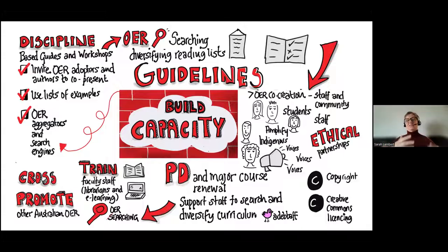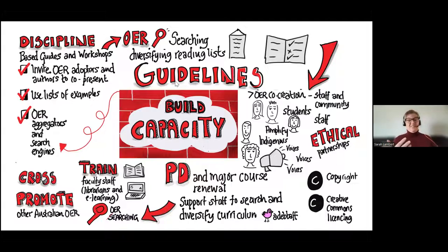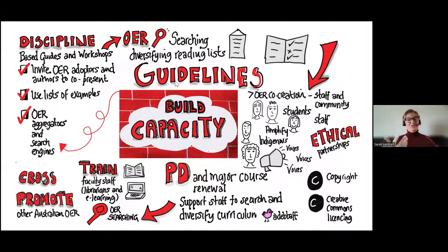Recommendations include combining social inclusion with open access benefits — for example, guides and lists of OER that diversify authors and blend knowledges, or workshops reviewing whether all your reading list authors are white and mostly male and whether it's time to refresh to a more diverse reading list. That sends a powerful message to students about who you think knowledge comes from. This is a lot more than just 'we've got Pressbooks, would you like to play.'